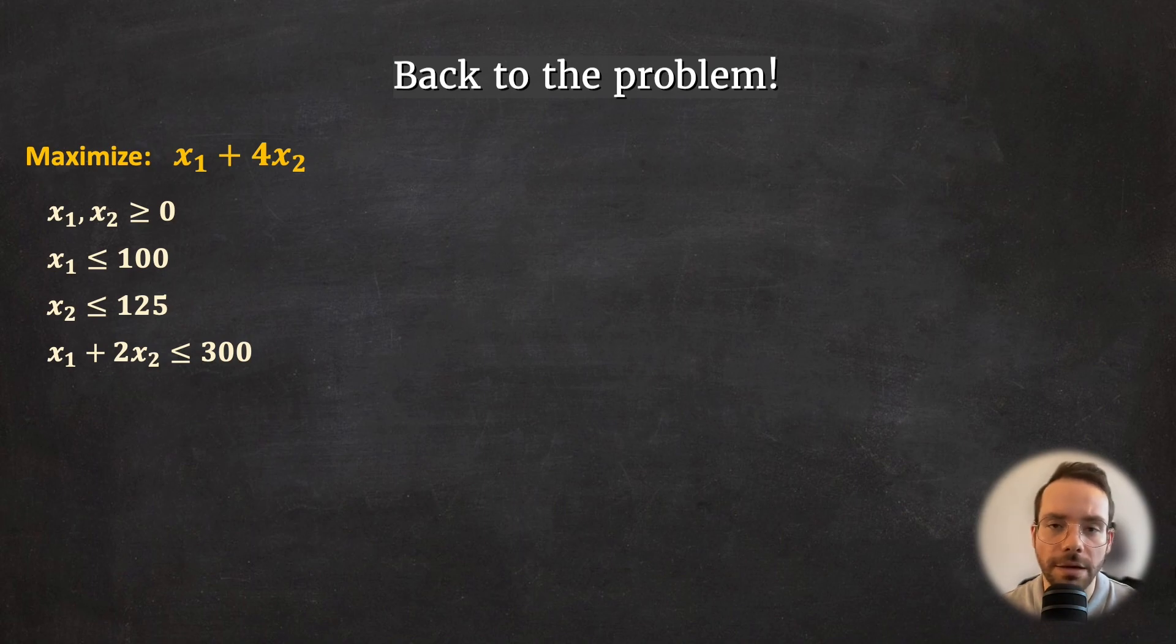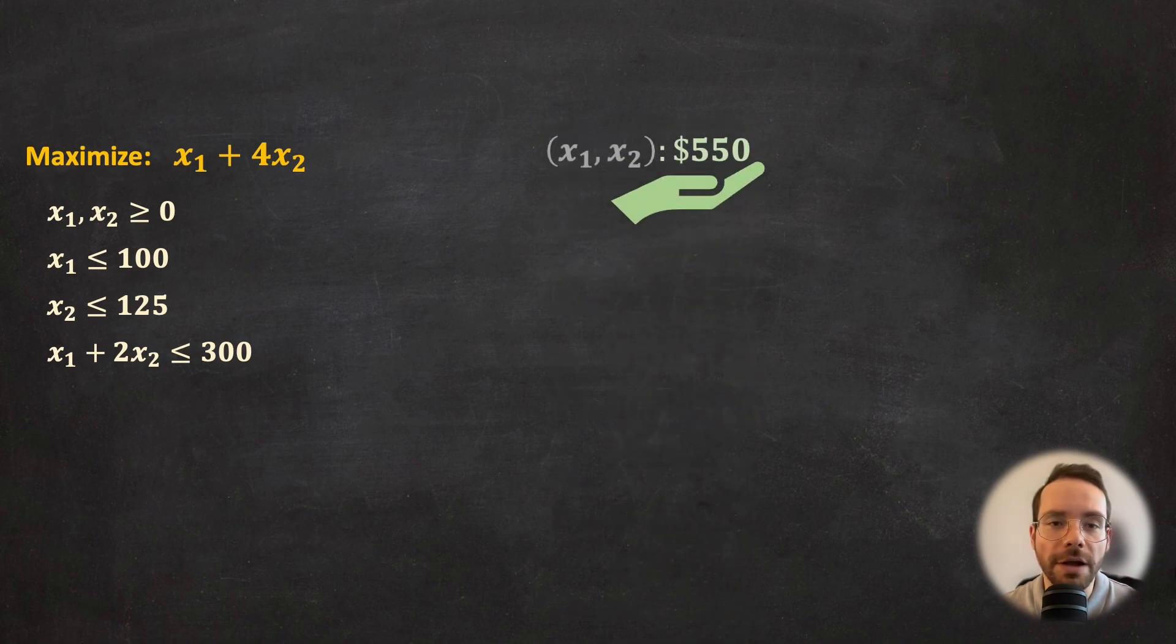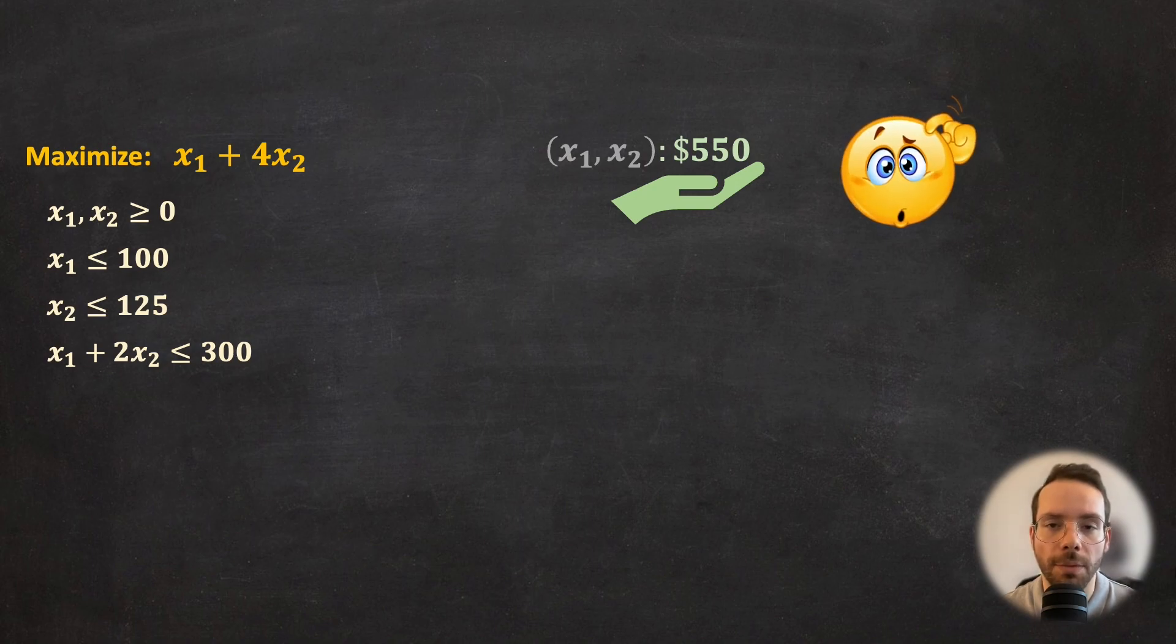Somebody comes to you and claims, with a particular pair of x1 and x2, the optimum value of this objective function is 550. How can we check this claim? Well, one thing we can do is to take a combination of the constraints to produce a new valid inequality that upper bounds the objective function.